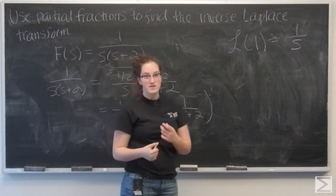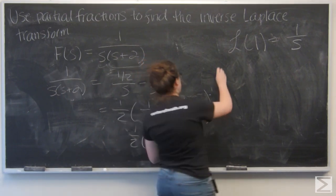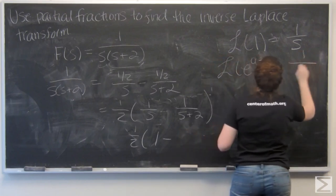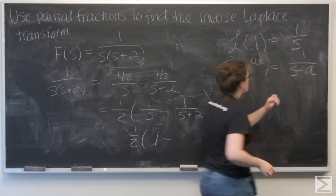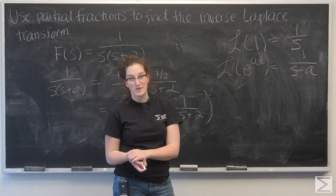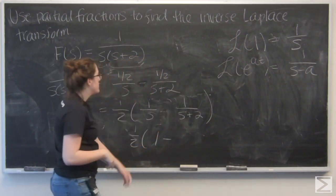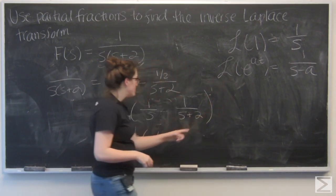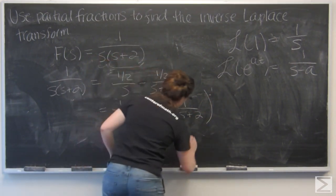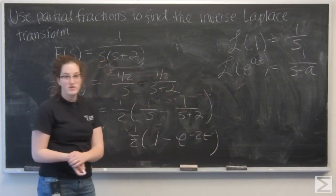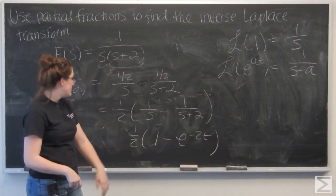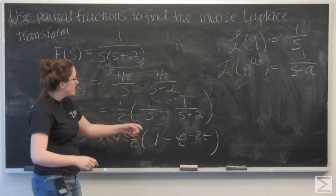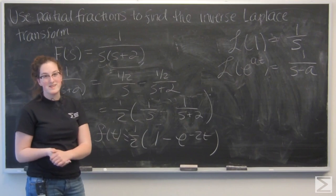The other one we're going to need here is the Laplace transform of e to the at, which is 1 over s minus a for a sufficiently large s so the denominator is not 0. So here I have s plus 2 that makes a negative 2, which gives me e to the negative 2t when I take the inverse Laplace transform. So f of t equals 1 half quantity 1 minus e to the negative 2t.